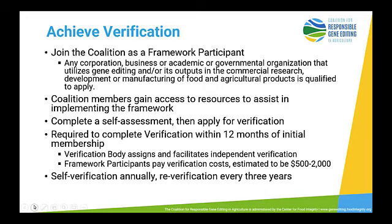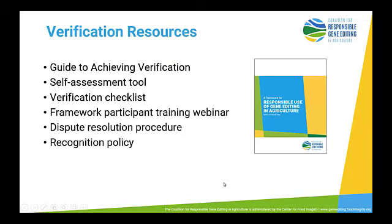So to summarize: self-verification annually, re-verification every three years, $1,000 a year to participate, verification costs estimated between $500 and $2,000 based on information from our verification partner. The Framework Oversight Committee approved the framework in December of 2020, and in 2021 we spent most of our time working on detailing verification, because we heard very clearly that organizations need to know what constitutes verification before making an informed choice about whether to participate. All materials including a step-by-step guide to achieving verification are available on our website: geneediting.foodintegrity.org.